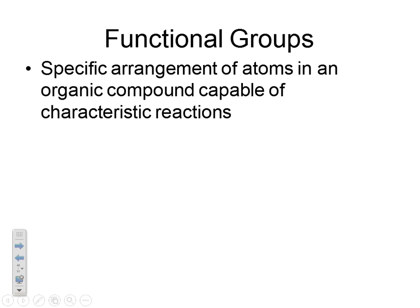For example, an alkene — a double bond — could be considered a functional group because it's a specific arrangement of atoms, meaning two carbons double bonded to one another. More typically, though, it involves oxygen. If you introduce oxygen into a carbon chain, into an organic compound, you get very different functionality and reactivity, and that's why they're called functional groups.